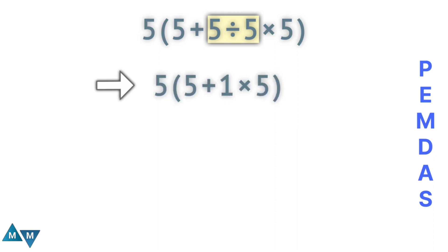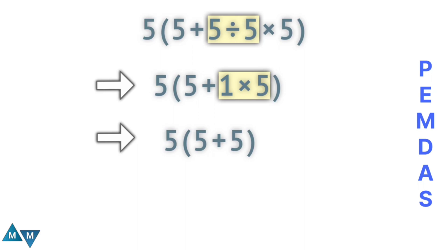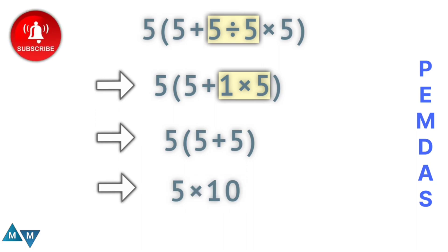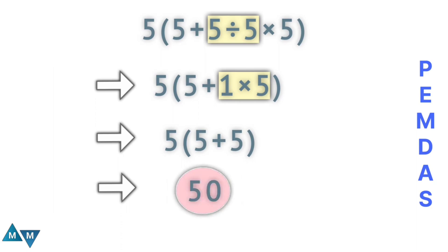So we have five plus one times five. Since multiplication has a higher priority, one times five will be our next move, which equals five. We're still inside the parentheses, so we have five plus five, which equals 10. Now we're done inside the parentheses. Five next to the parentheses is multiplication, so five times 10 is 50. This is our final answer.